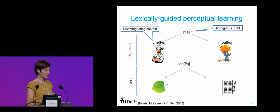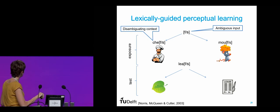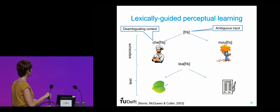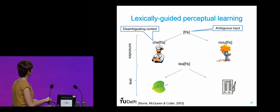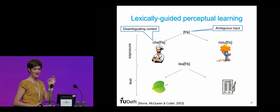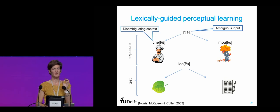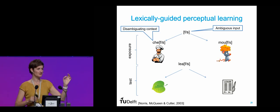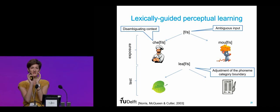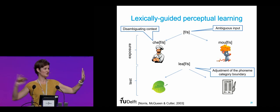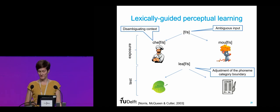Both groups get the exact same acoustic token, but one is told it's an 'f' and the other that it's an 's'. When you then ask them to listen to a minimal pair like 'leaf' or 'lease' with an ambiguous final sound, the people exposed to the 'f' context hear it as 'leaf', while those exposed to the 's' context hear it as 'lease'. It's the exact same acoustic token, but based on the environment in which you heard it, you adapt your phoneme categories and suddenly hear the same ambiguous word in two different ways.